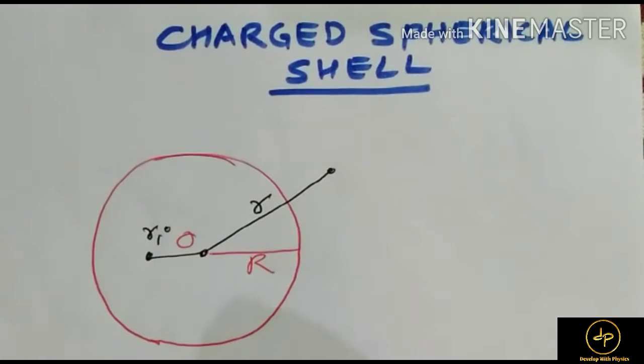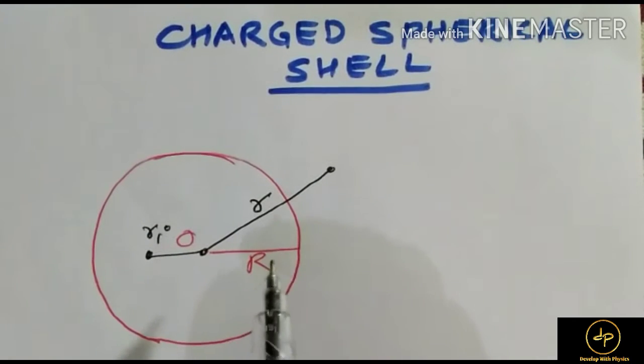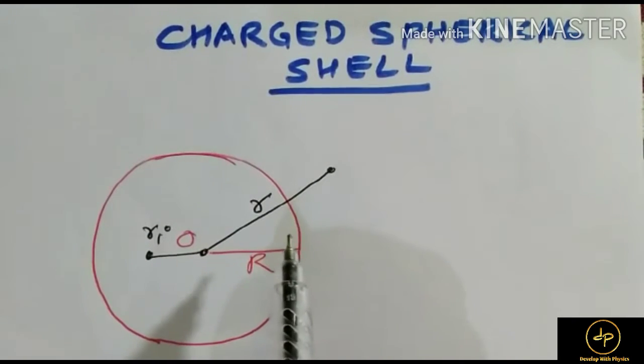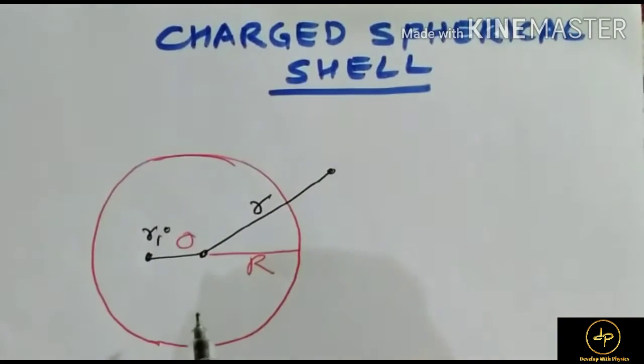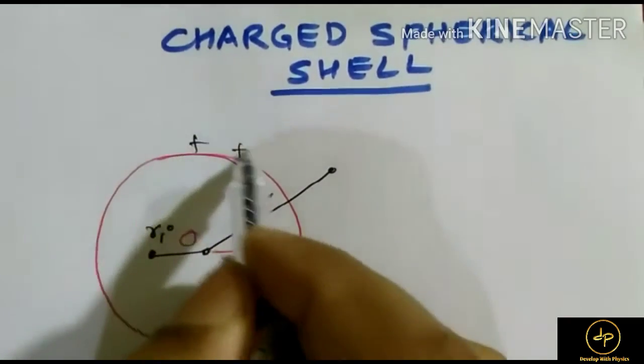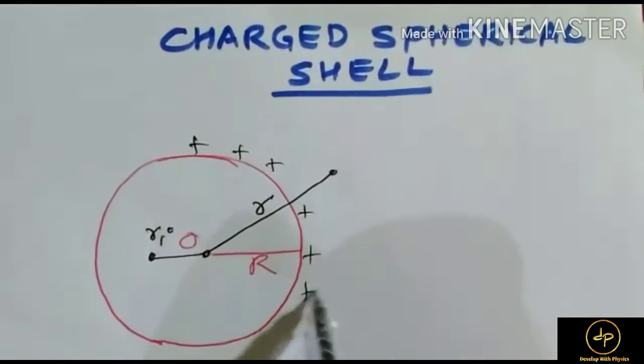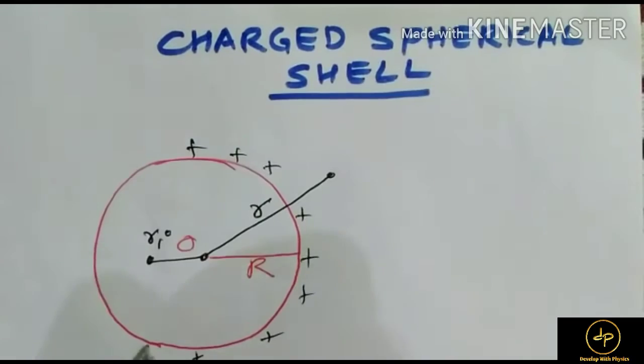Hello students, in this video we will discuss the electric potential due to a uniformly charged shell. This is a charged shell on which the charges are uniformly spread.